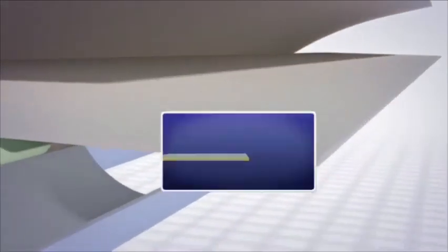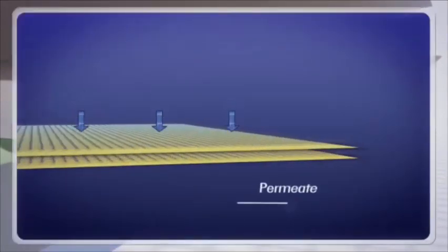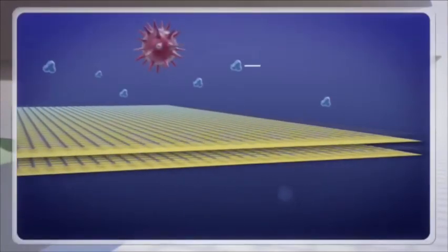The membrane layer is extremely thin. It allows water to pass through or permeate, while preventing other compounds from passing through.